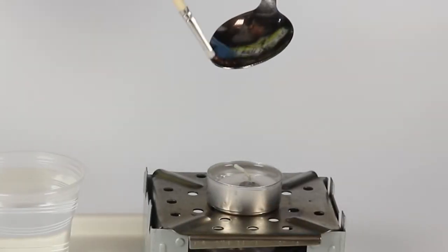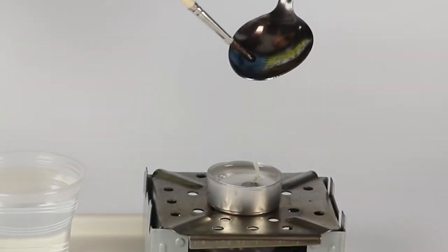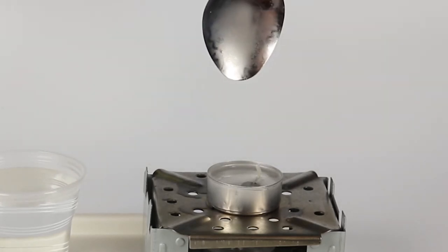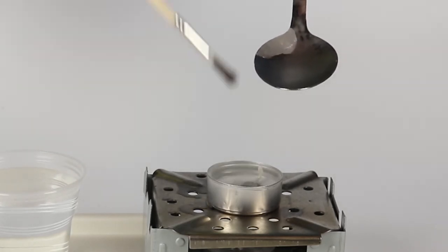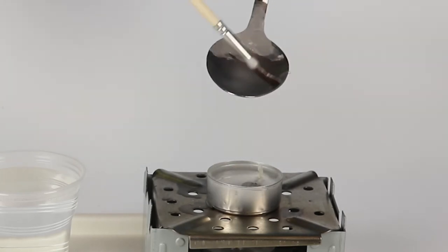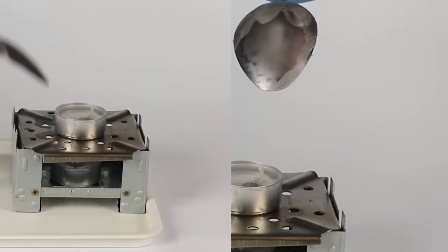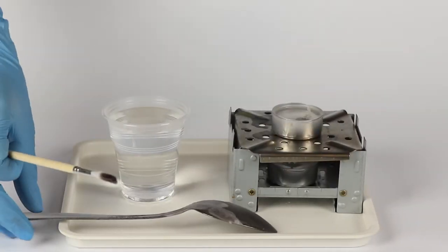Using the brush, apply the melted paraffin to both sides of the spoon. Blow on the spoon to cool it and make the paraffin solidify.